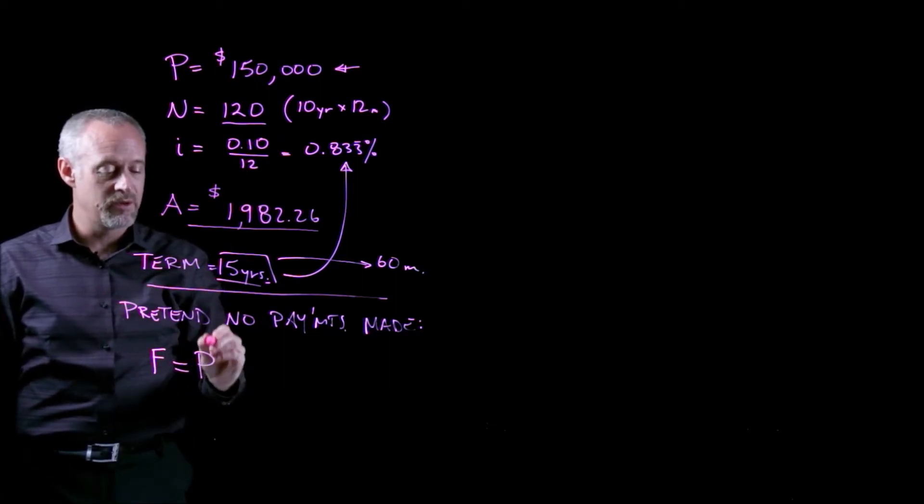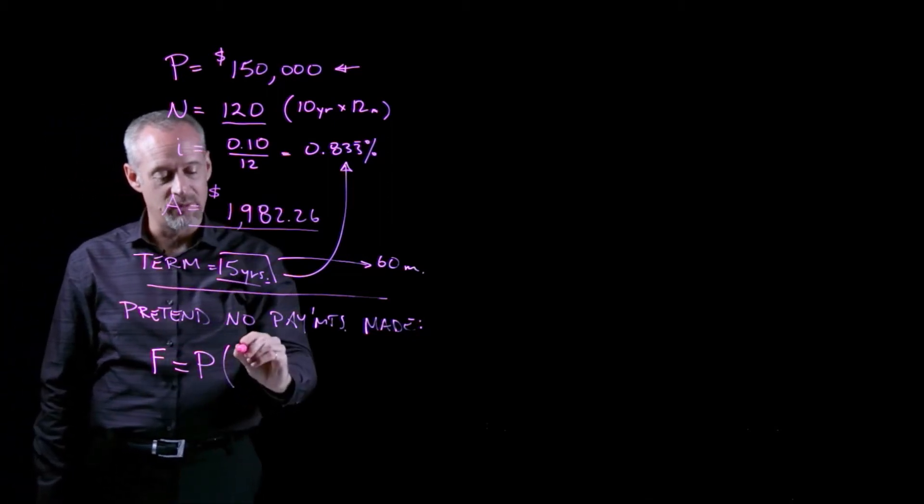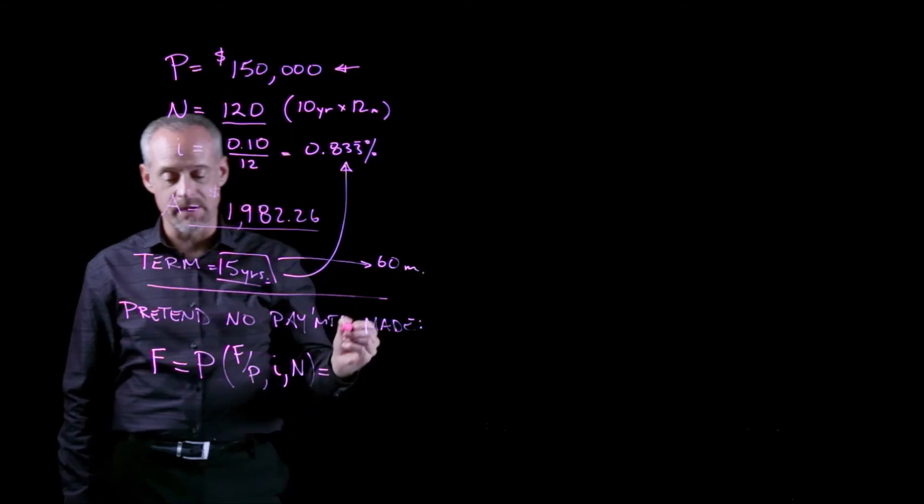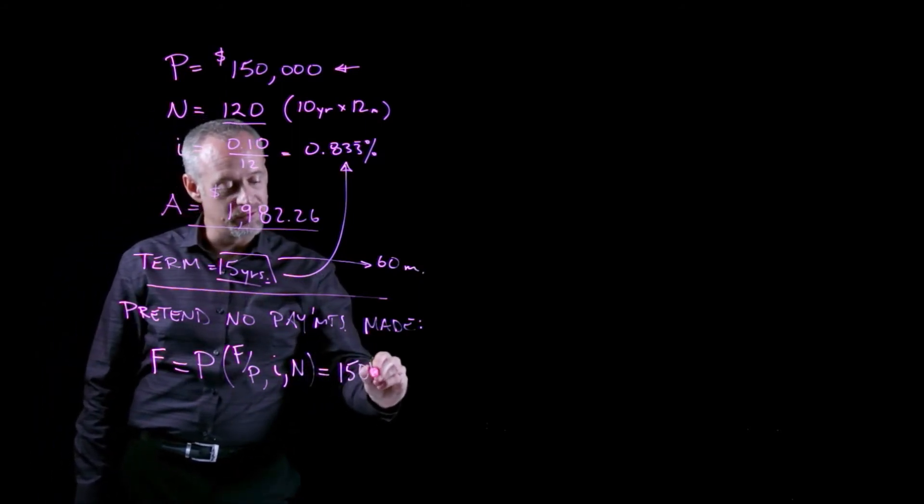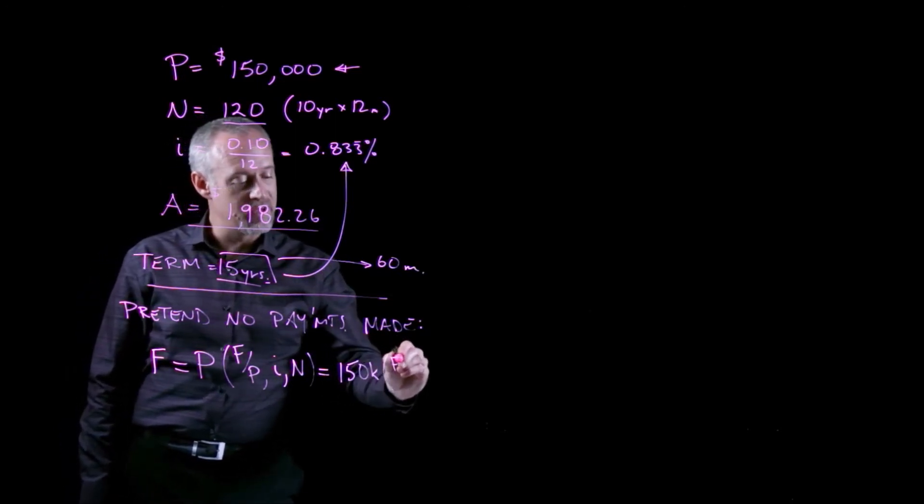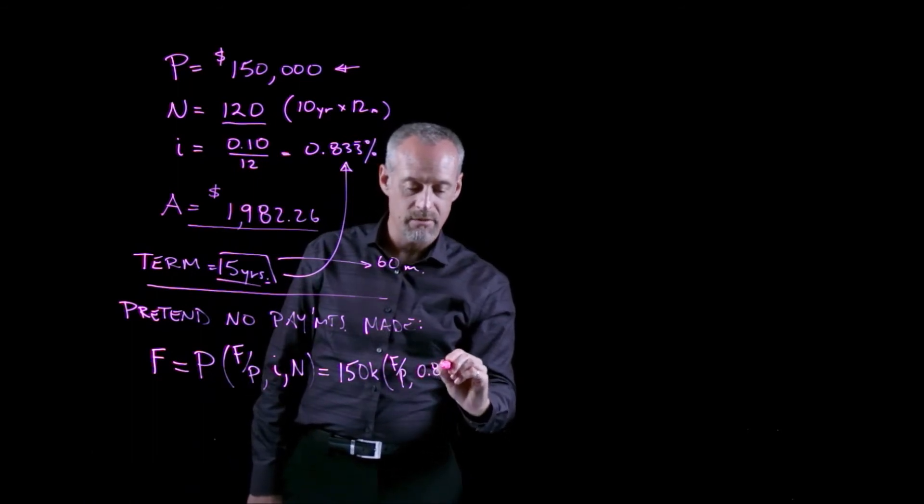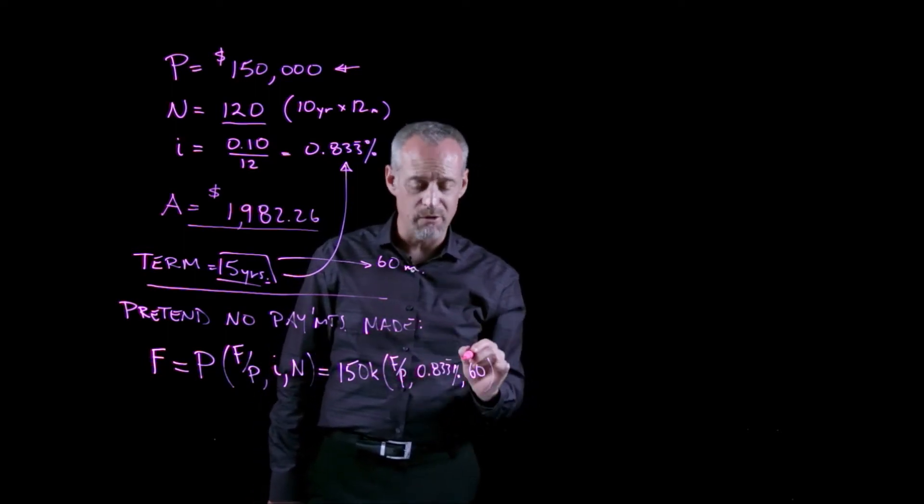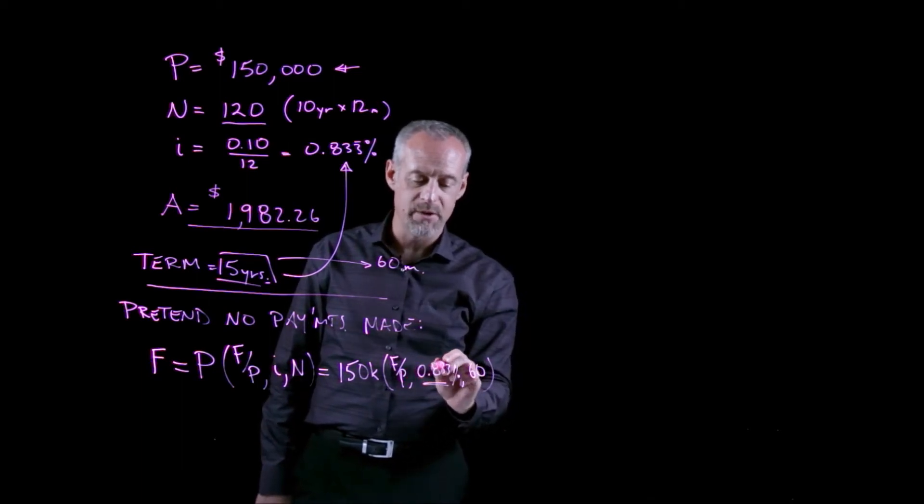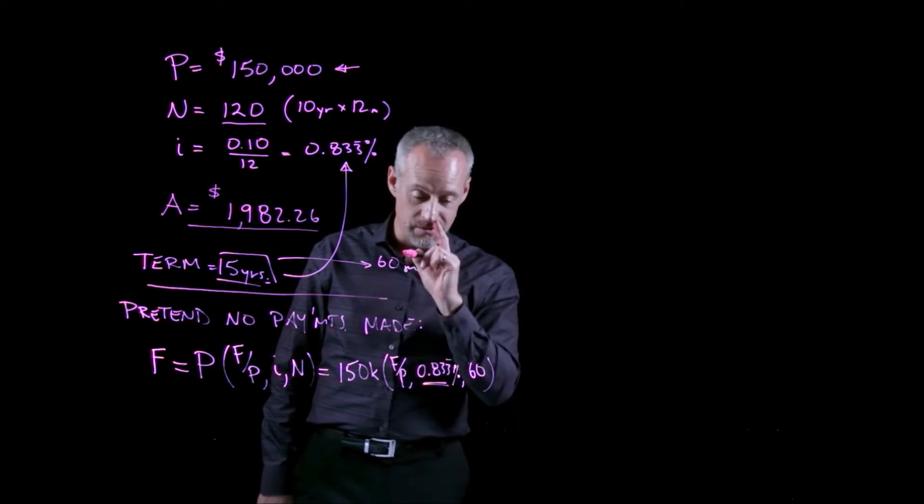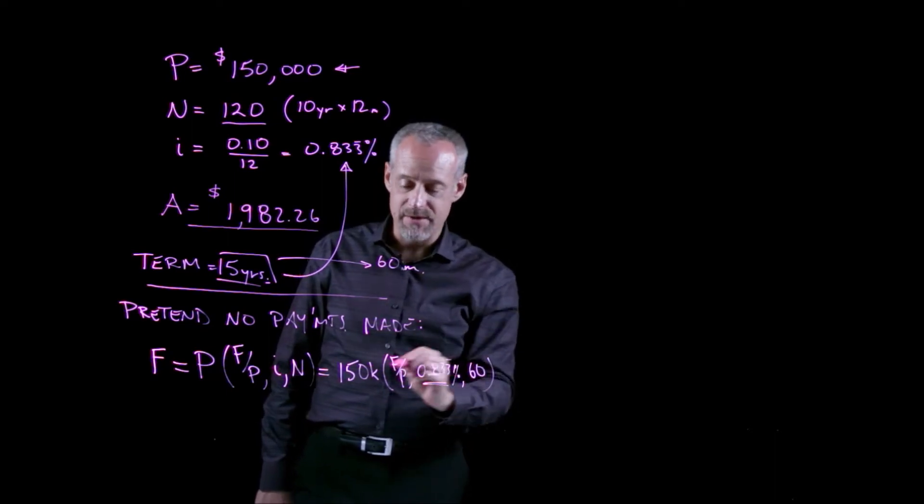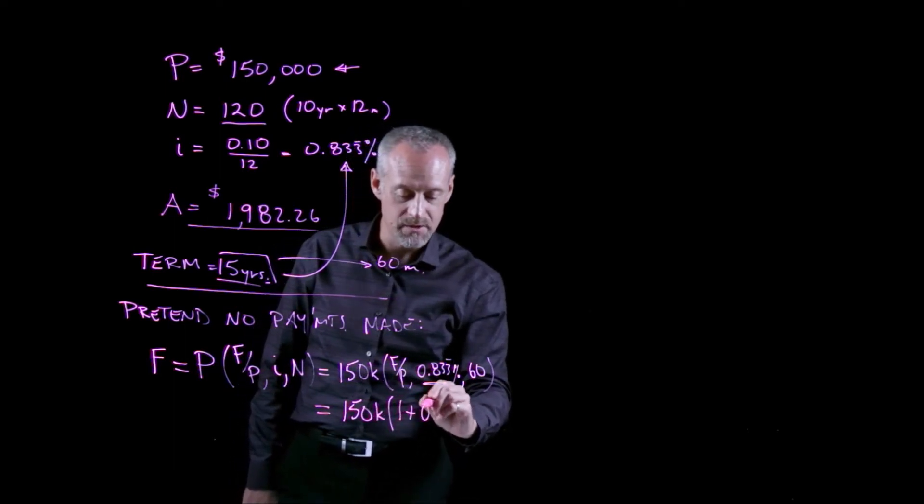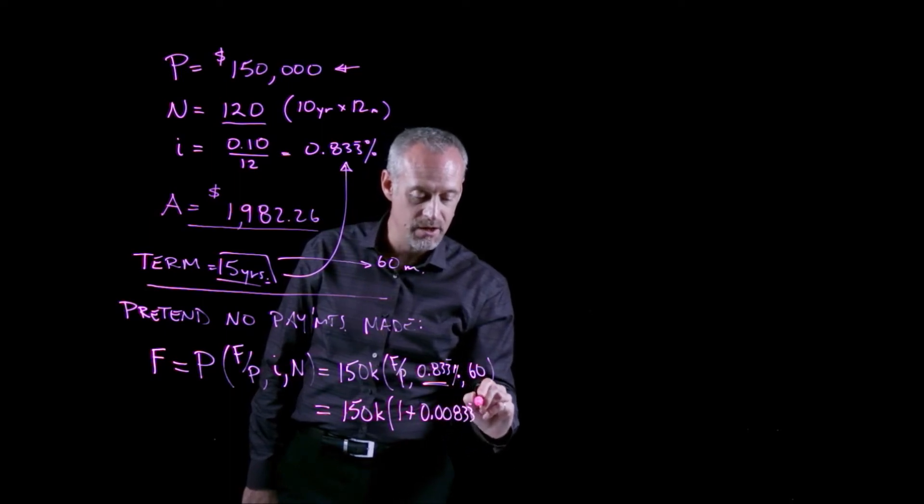I will take the present value P, $150,000, and multiply by the F given P factor for 0.833 repeating percent and 60 months. Now recall from the first time through this problem that because we don't have a nice round integer number for the interest rate, we have to use the formula. The F given P formula is 1 plus i to the power of n. We'll do 150K times 1 plus 0.00833 repeating to the power of 60.